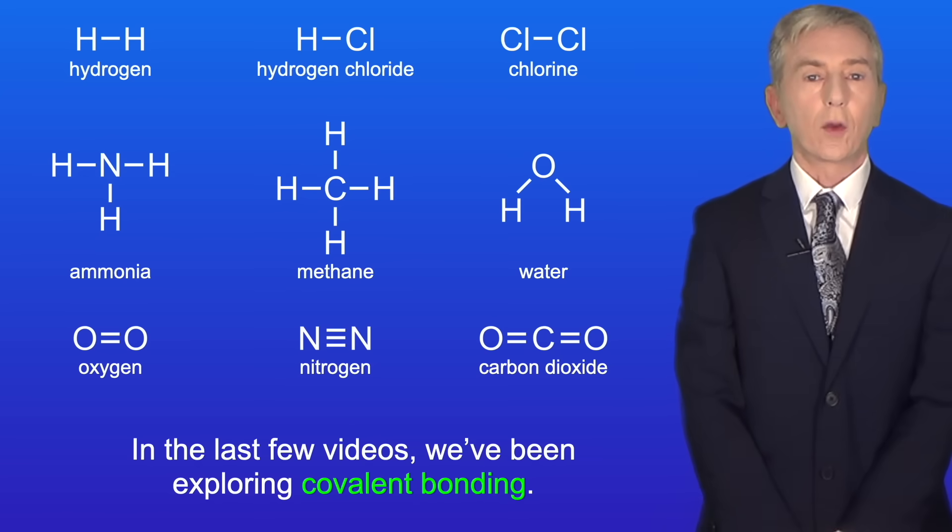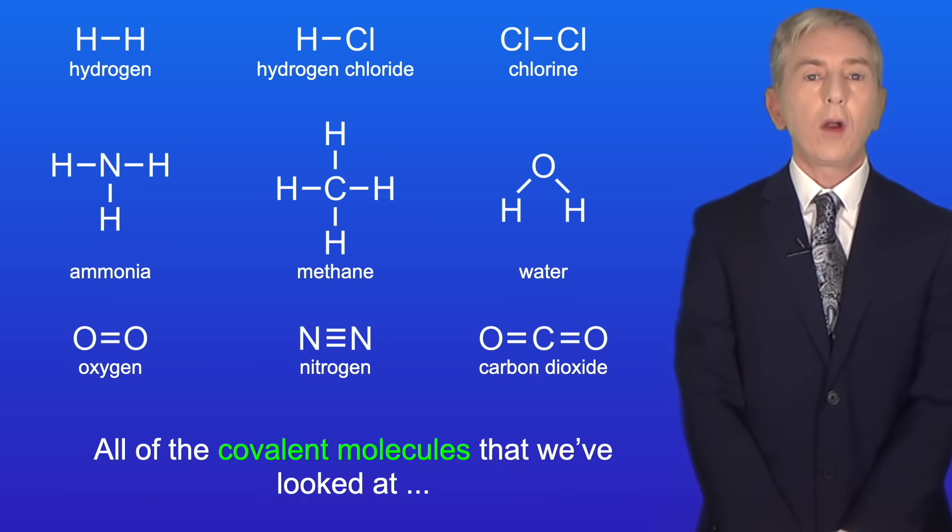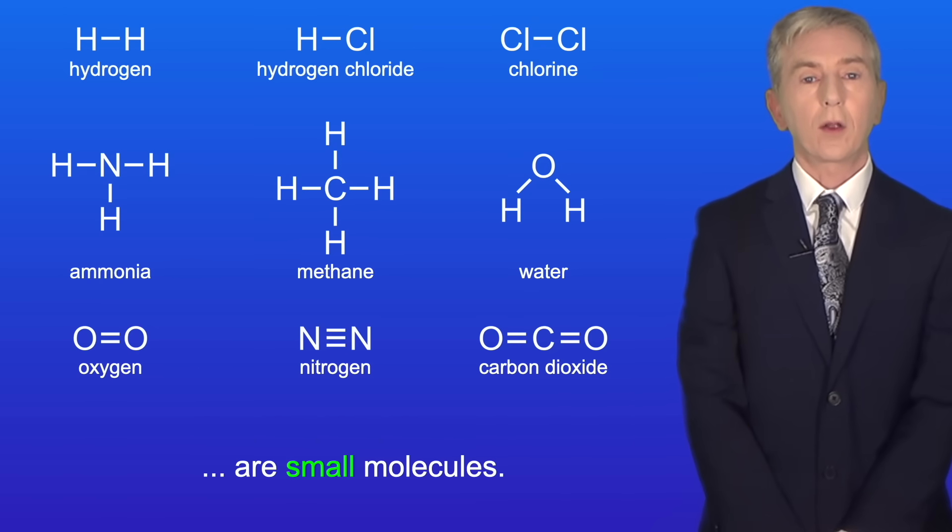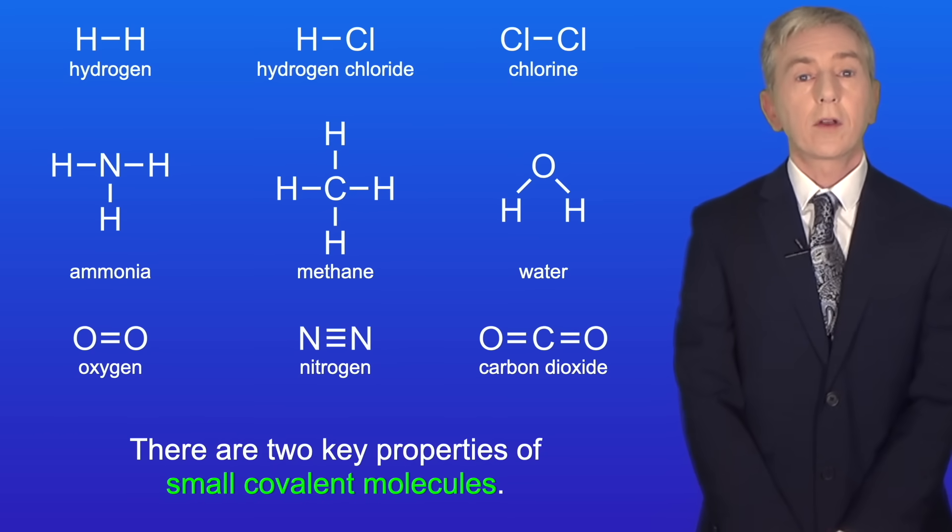In the last few videos we've been exploring covalent bonding. We've seen a range of covalent molecules which I'm showing you here. Now all of the covalent molecules we've looked at are small molecules. For example, methane only has five atoms. There are two key properties of small covalent molecules.